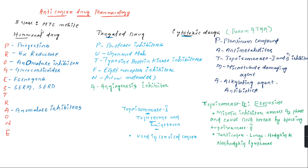We can remember the categories by the mnemonic HTC mobile: H for hormonal drugs, T for targeted drugs, and C for cytotoxic drugs.